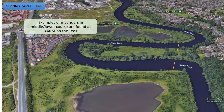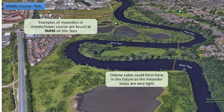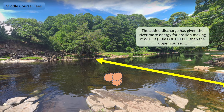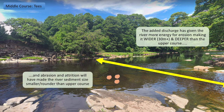An example of famous meanders in the middle to lower course region would be at Yarm, which we can see here. Because the loops of the meander are quite tight, we're probably going to get oxbow lakes forming here in a couple of thousand years' time. The added discharge has allowed the river to erode outwards, so it's much wider — up to 30 metres wide — and much deeper than in the upper course. Processes like abrasion and attrition acting on the sediment since the upper course mean any sediment is now a lot smaller and rounder.